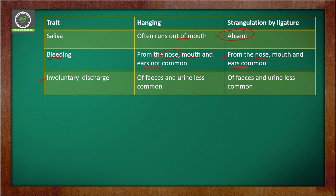The fifteenth and sixteenth traits relate to involuntary discharge: discharge of feces, urine, etc. is less common in case of hanging, but in case of ligature strangulation involuntary discharges are also seen.